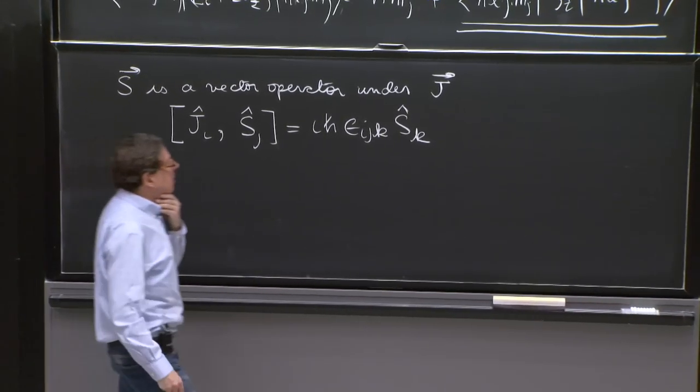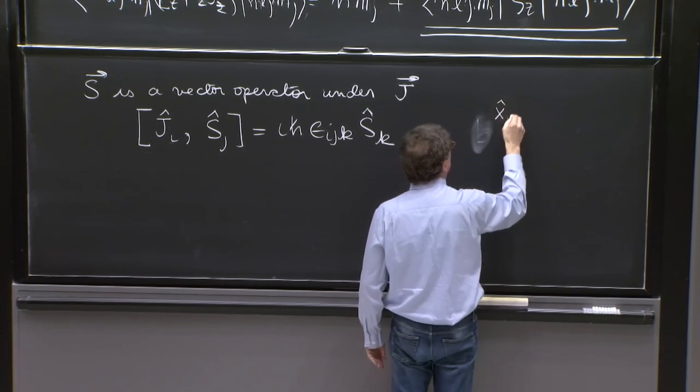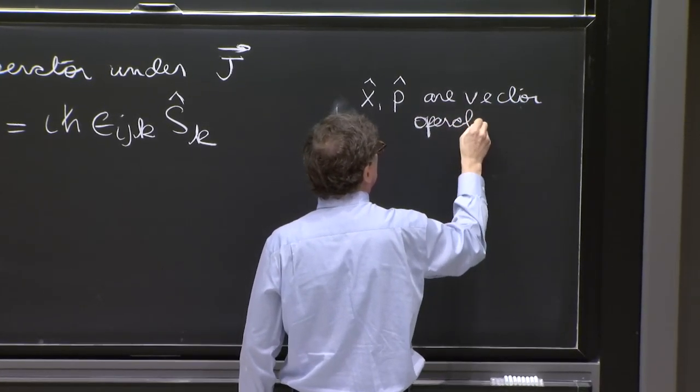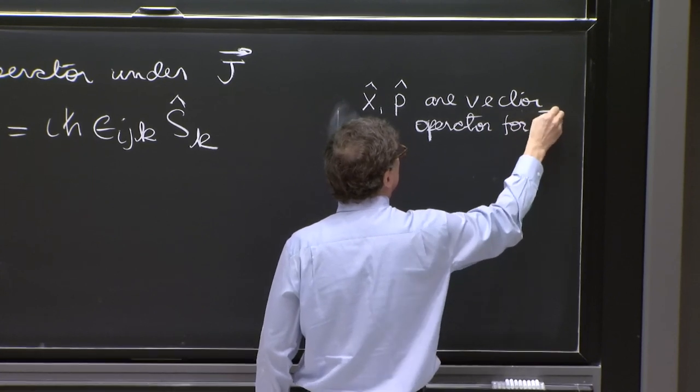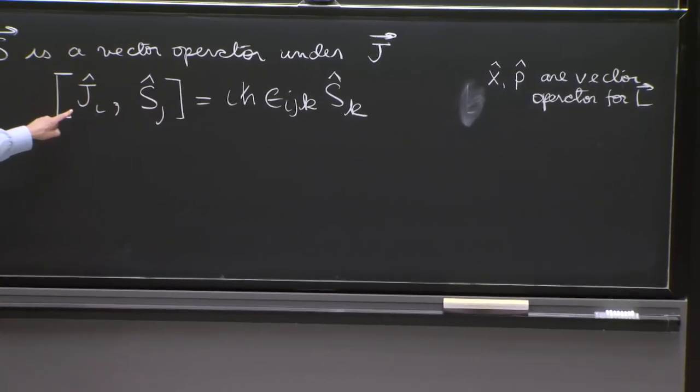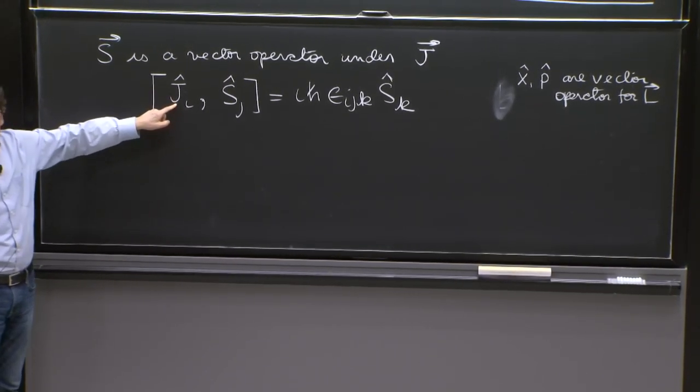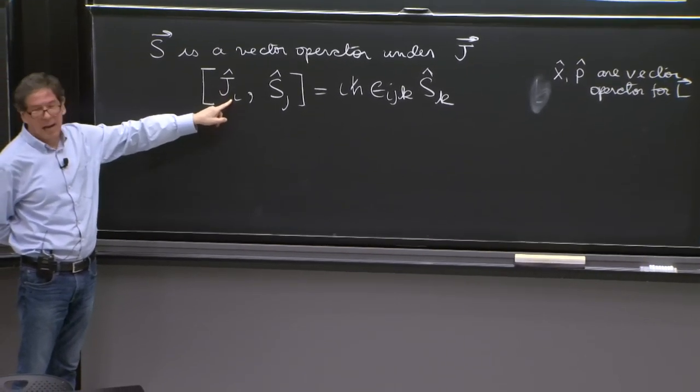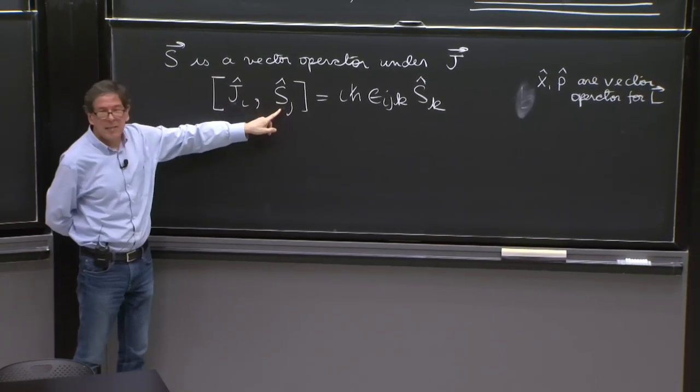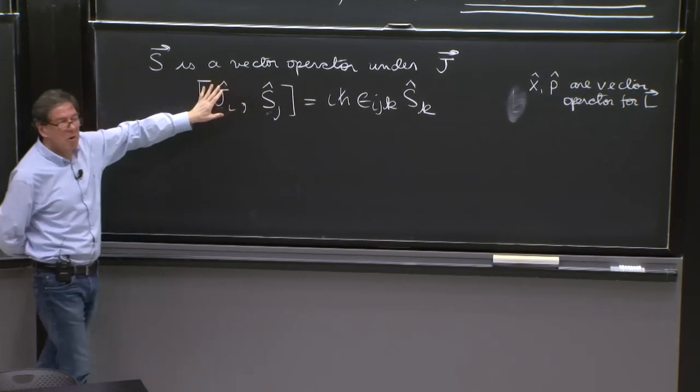You may have seen this in a previous course, in 805, where you might have proven that x and p are vector operators for L. And here, the proof is not all that difficult. In fact, it's almost obvious this is true. Ji is Li plus Si. Li doesn't talk to Sj. But Si with Sj satisfy the algebra of angular momentum that is precisely this one. So this is almost no calculation.